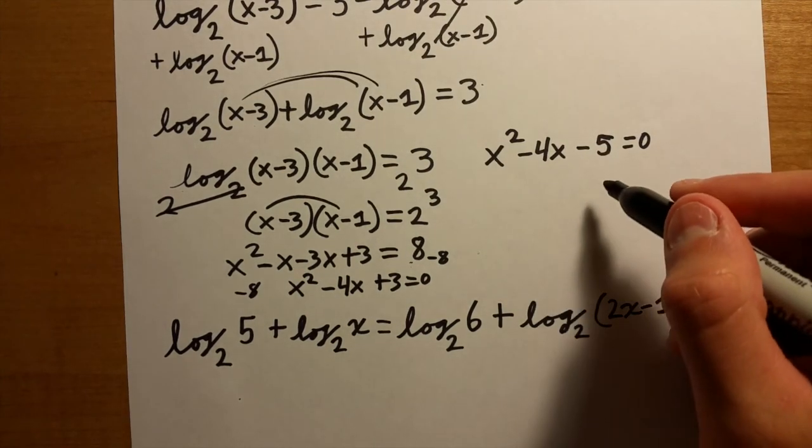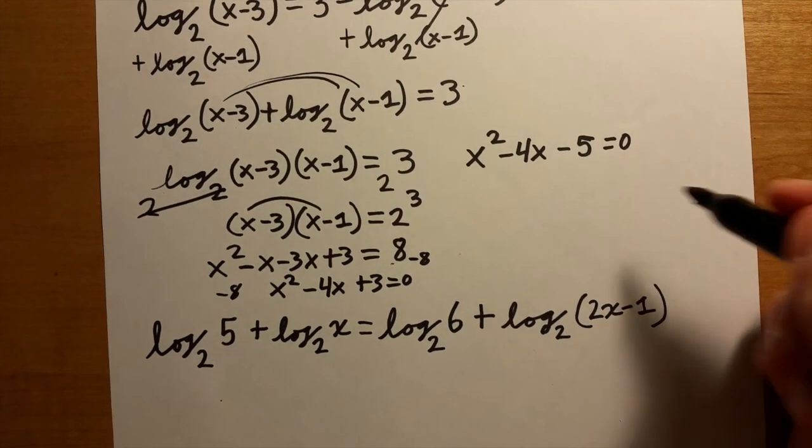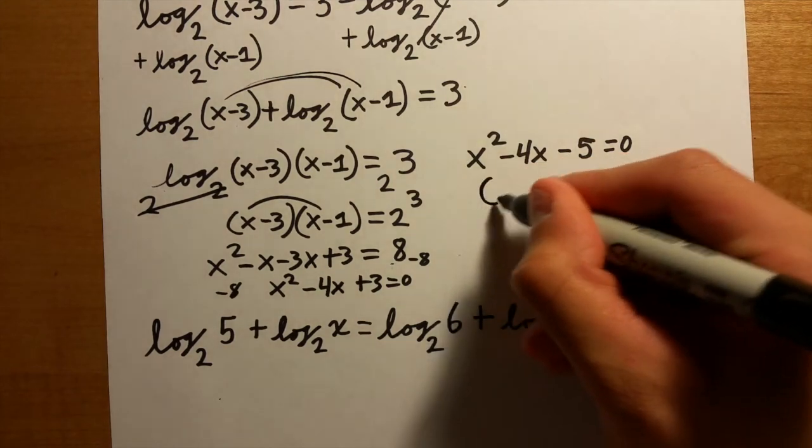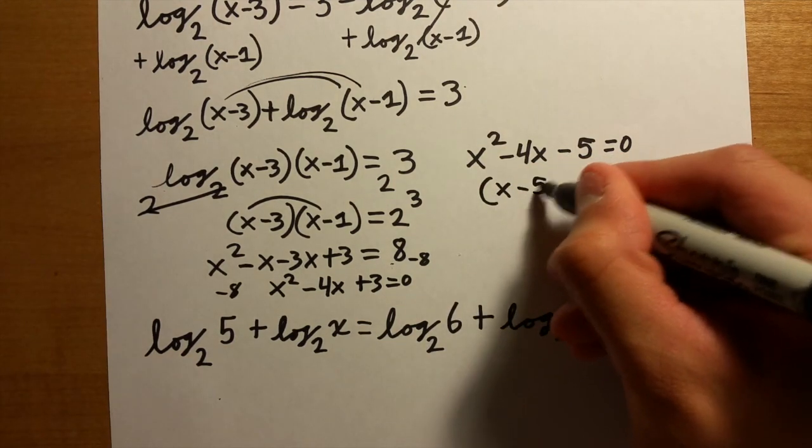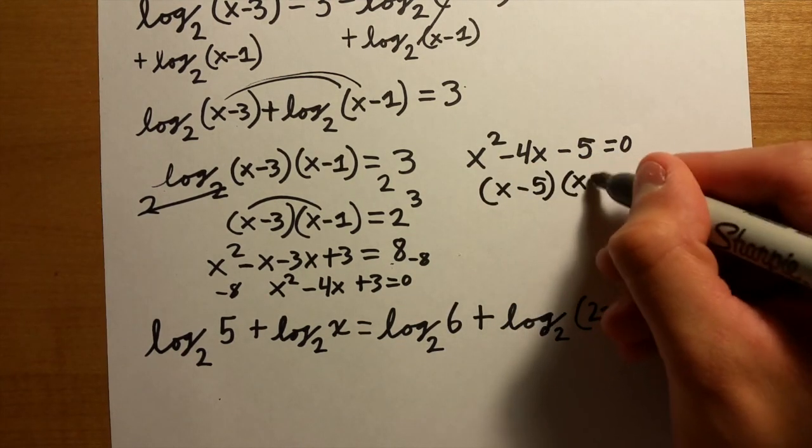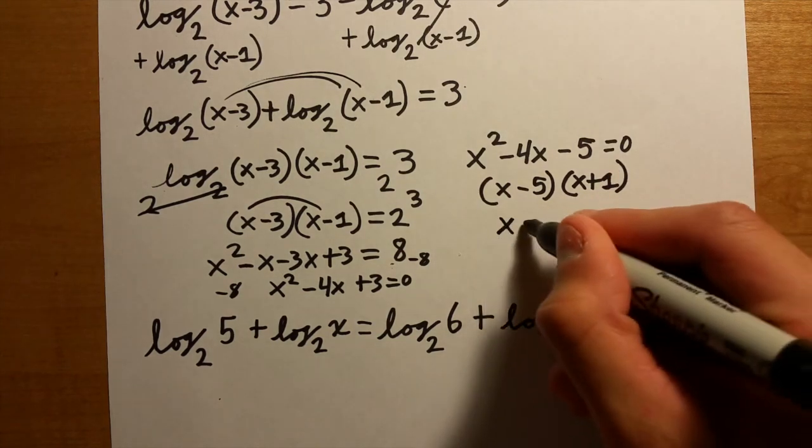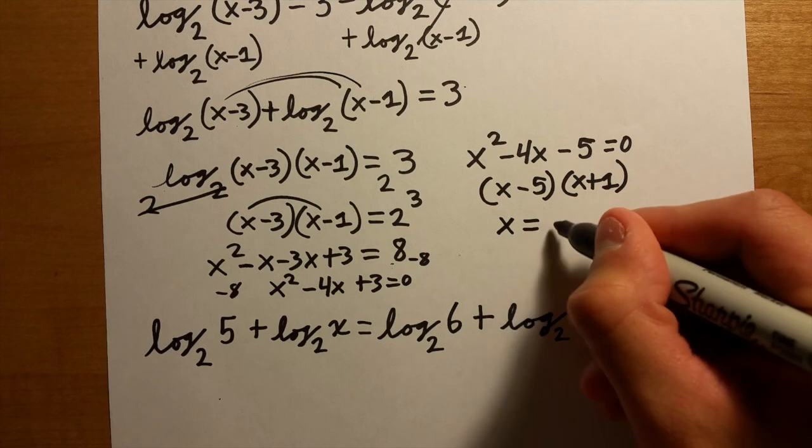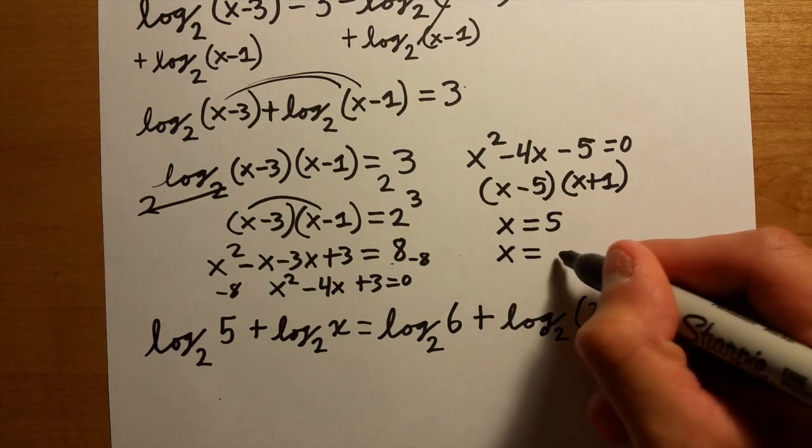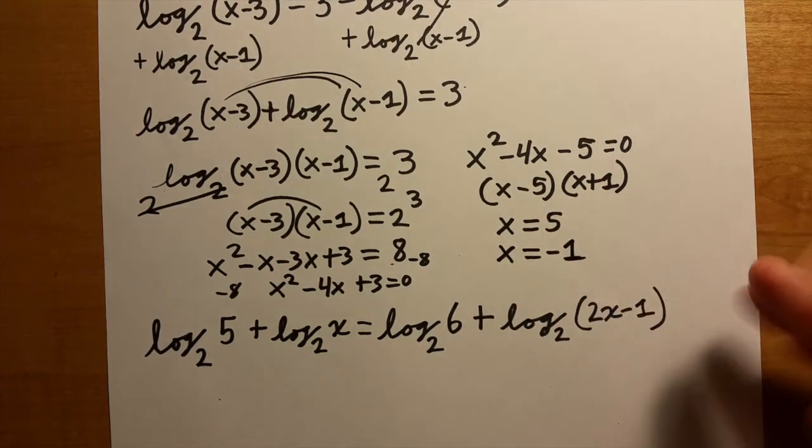After we're in this form it's nice because it actually factors out, so we have (x-5)(x+1). So we're going to end up with two answers: x = 5 and x = -1.